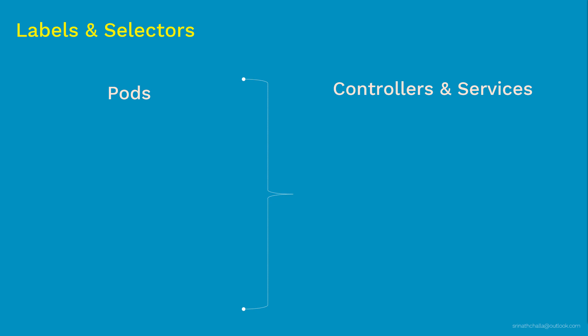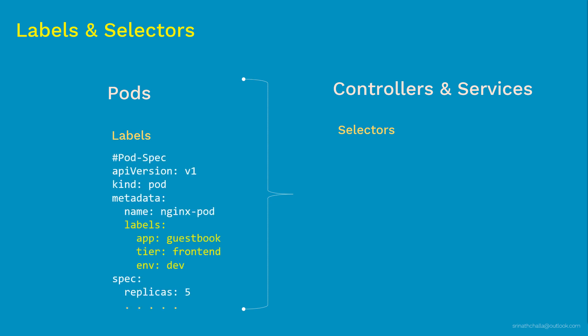The main question is: how do these controllers and services know which pods to manage? The answer is labels and selectors. Labels are key-value pairs generally attached to pods — a kind of tag given to one or a set of related pods. They help us manage and display related pods together as a set instead of individually. For example, a pod named nginx-pod can have three labels, where 'app' is a key and 'guestbook' is a value.